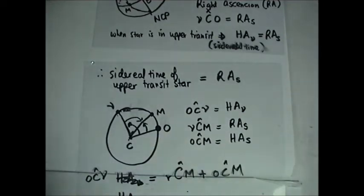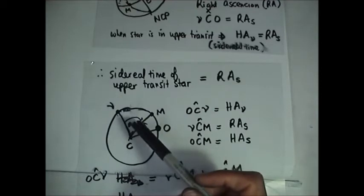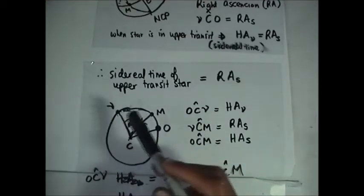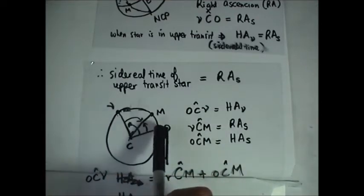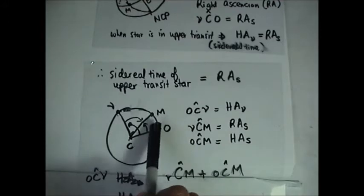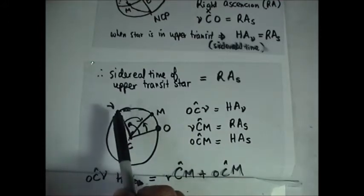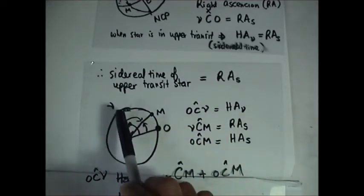M was coinciding with O when it was in upper transit, but now since the time is no longer upper transit time, M has also moved. So we are now going to look at the angles. We now have angle OCV — V is now at this point. Angle OCV measures the hour angle of V, because we are measuring it from the origin O, and anything measured from origin O measures the hour angle of that particular point.